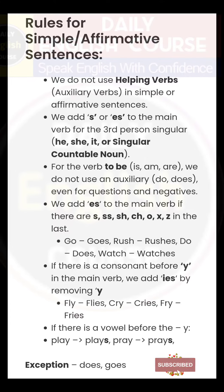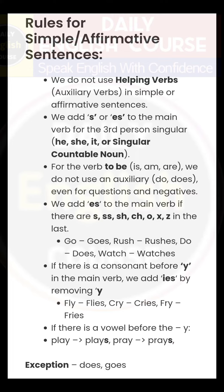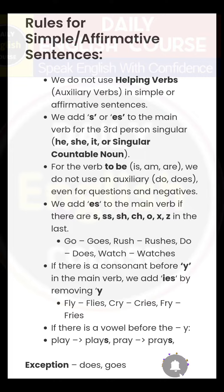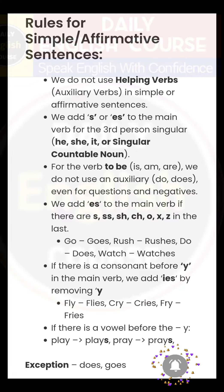Rules for simple affirmative sentences. We do not use helping verbs or auxiliary verbs in simple or affirmative sentences. We add -s or -es to the main verb for the third person singular: he, she, it, or a singular countable noun.